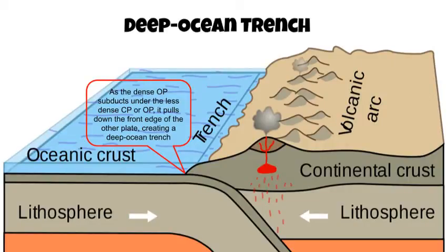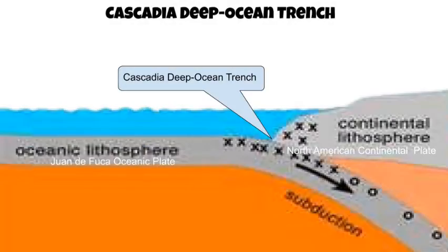As the dense oceanic plate subducts, it will pull down the front edge of the less dense plate. This pull down will create a deep ocean trench. An example of this can be found off the west coast of North America, where the more dense Juan de Fuca oceanic plate is converging with the less dense North American continental plate. The Juan de Fuca plate is subducting under the North American plate, pulling the front edge down and creating the Cascadia deep ocean trench.